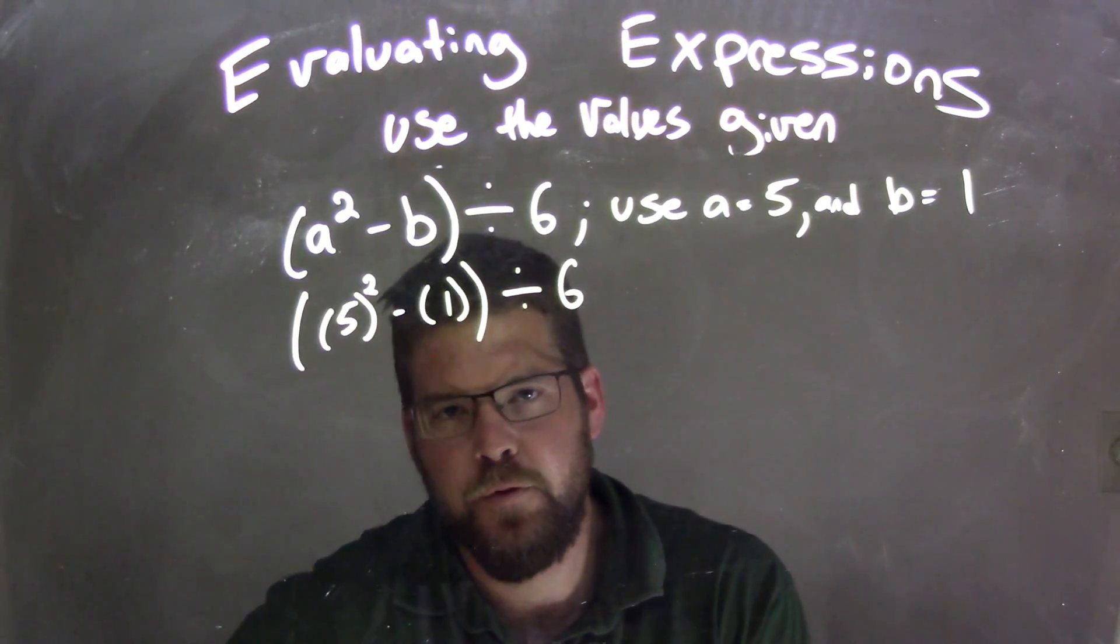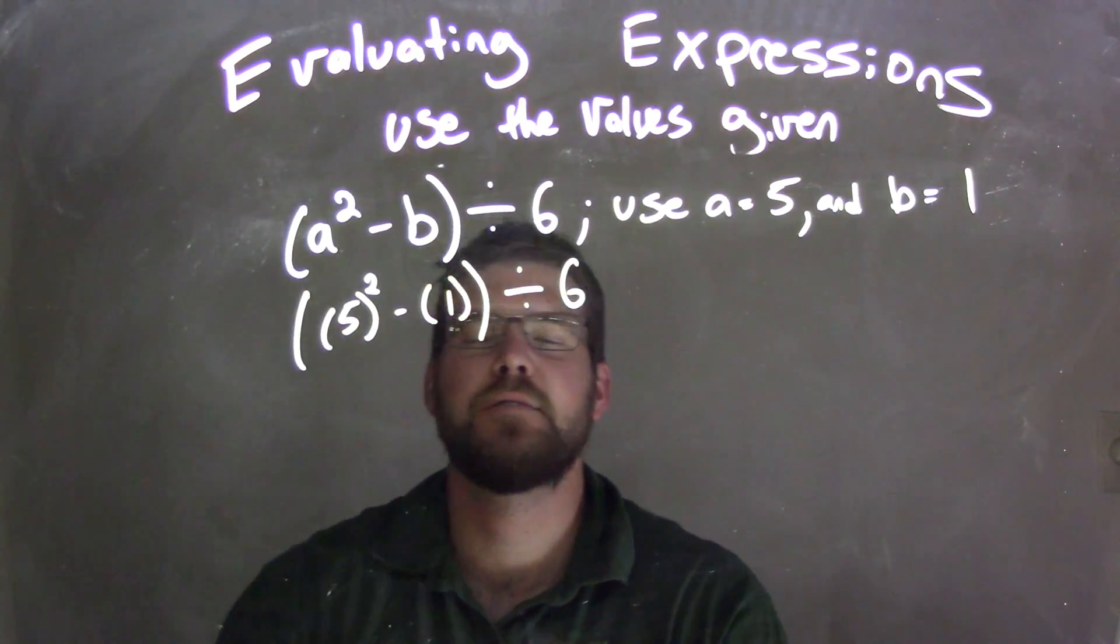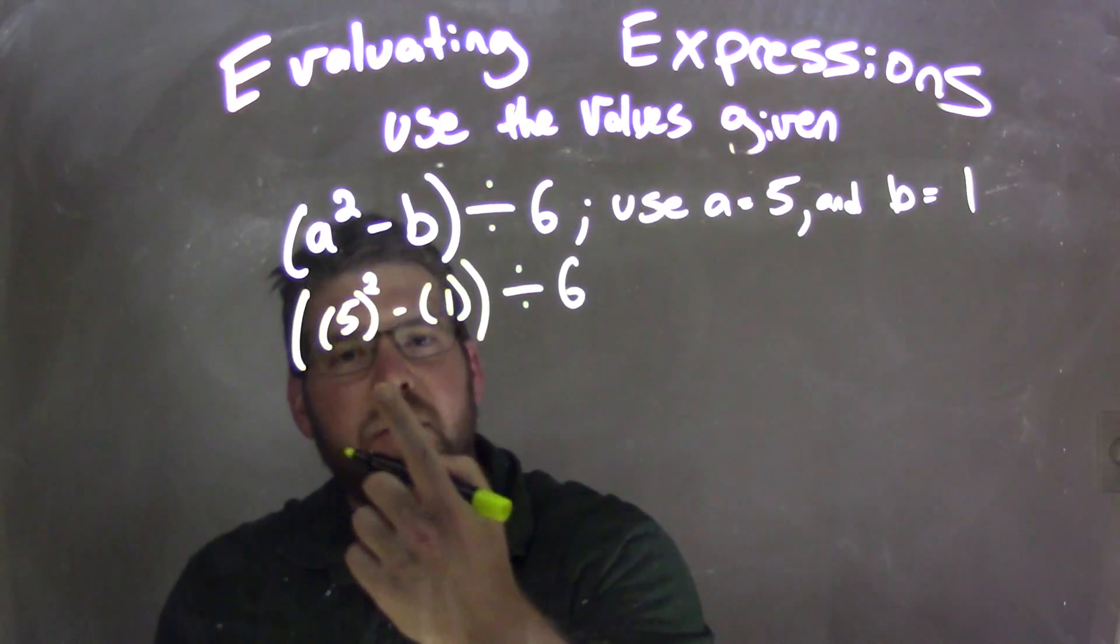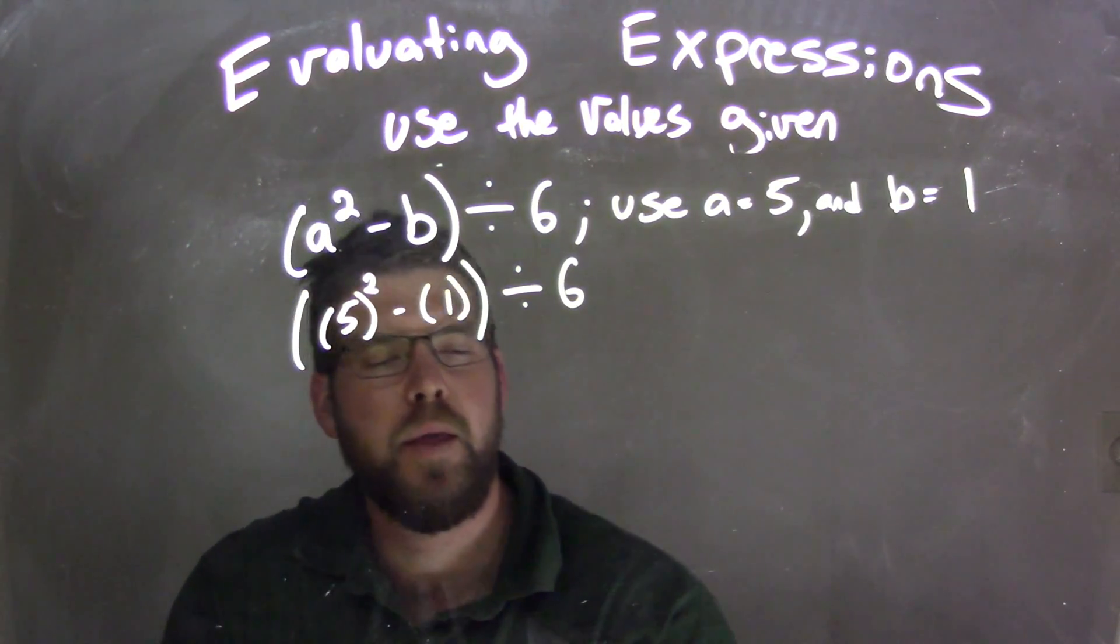So now we need to simplify. Well, our order of operations talks about parentheses first. So we have this set of parentheses where we deal with what's on the inside first. But inside of that we have exponents, which is the biggest one there.